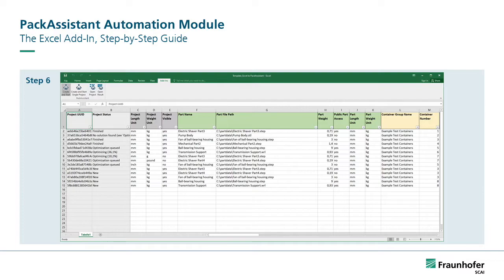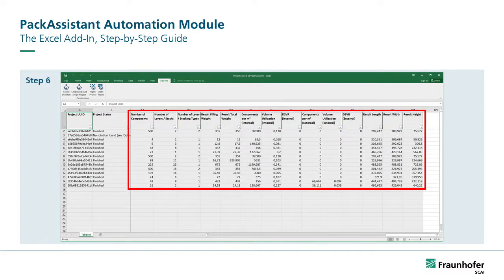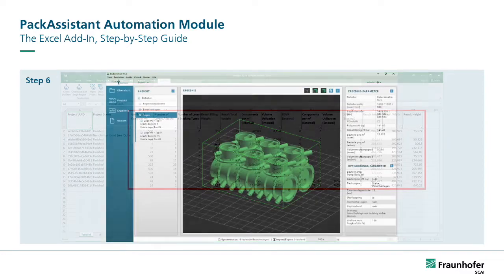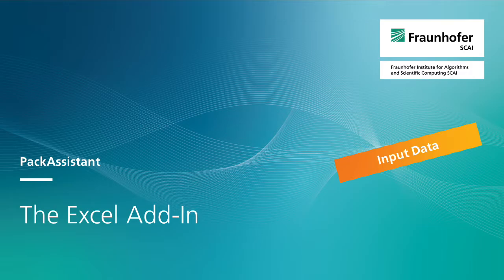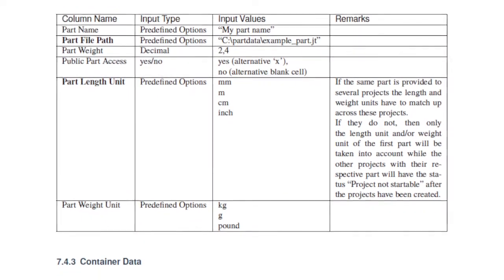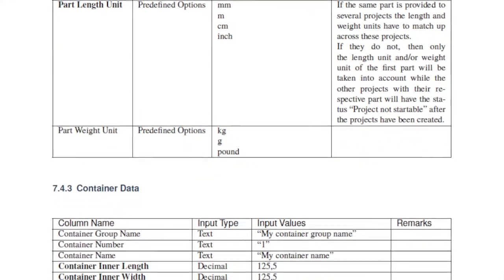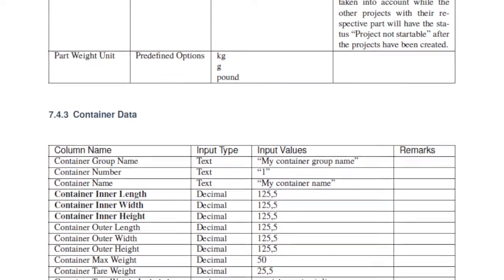Step 6: You can follow the optimization progress of every sent project in the project status column until it reaches its final state. When a project reaches its final state, you can view its best result in the result columns. The best result is the one which contains the most parts. Now that you understand the basics of how the Excel add-in works, you can start to customize the template file that you downloaded in Step 1. Except for the column headers of the data table, you are free to customize the file however you like — for example, modify the document to reflect your company's corporate design. In order for Pack Assistant to properly receive the data and automatically start the optimization of projects, the input data from the Excel document has to match up with the expected input schema. Please refer to the Pack Assistant documentation for further details and examples.